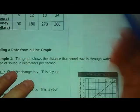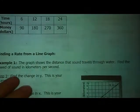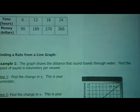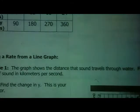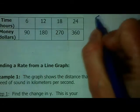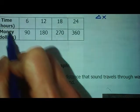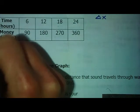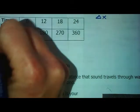This table shows the amount of money you can earn by dancing for a charity. We want to figure out how much we can make per hour. In order to do that we need to find the change in y and divide that by the change in x, because it's dollars per hour.